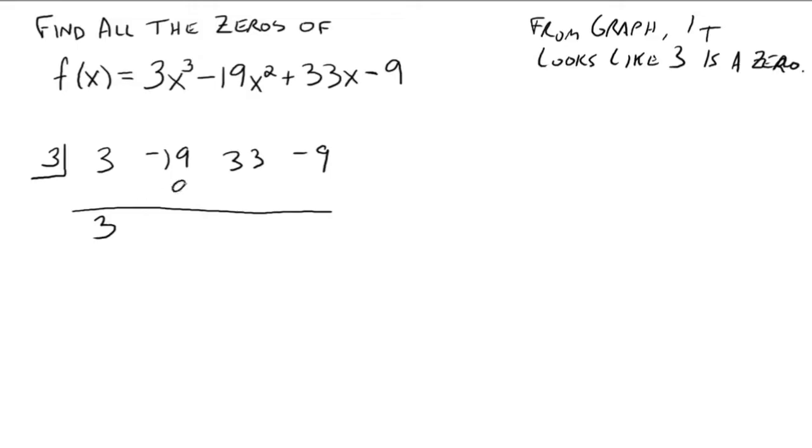3 times 3 is 9. That gives you negative 10. That's negative 30. That's 3. That's 9. And your remainder is 0. Remember, if your remainder is 0, then 3 is definitely a zero of your function.